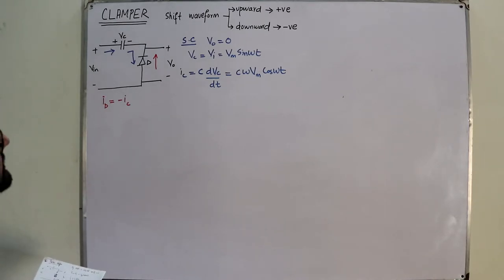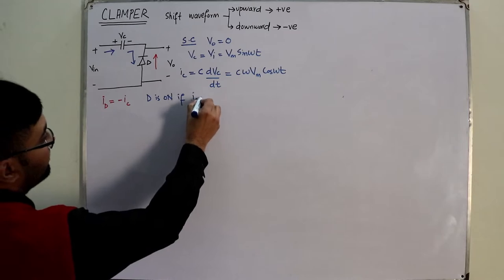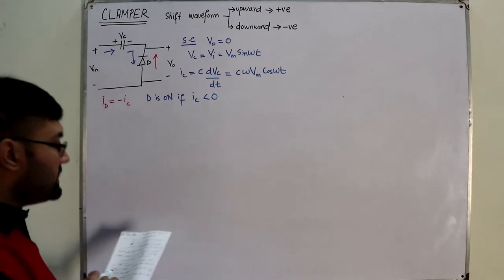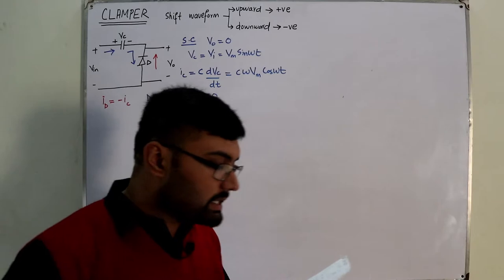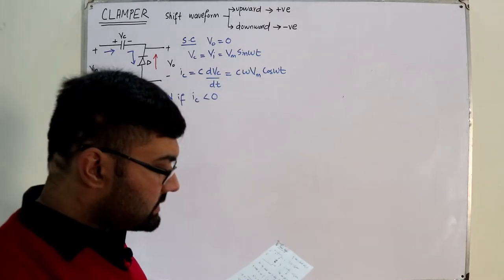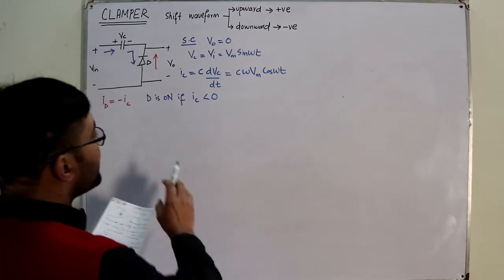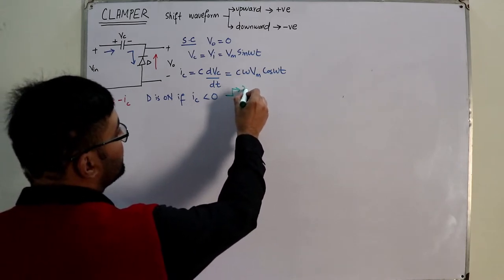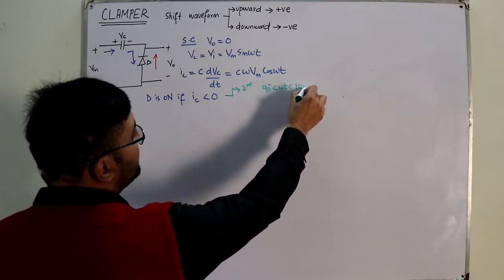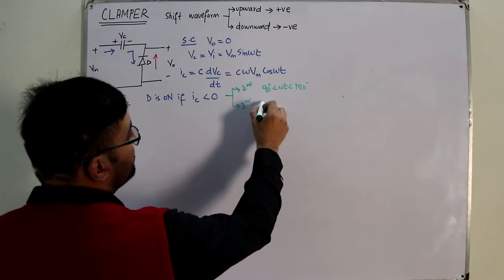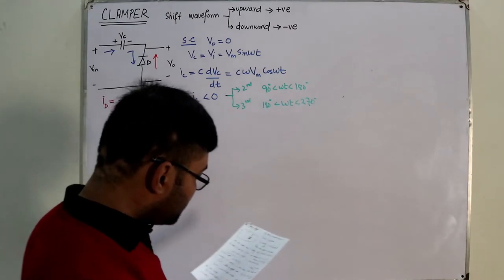The diode is on if Ic is negative. Ic is negative when cos(ωt) is negative. Cosine is negative in the second and third quadrants — that is from 90° to 180°, and from 180° to 270°. So this is the region where the diode conducts.